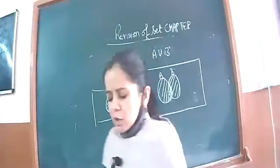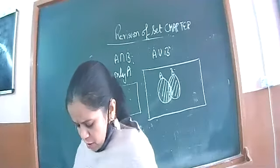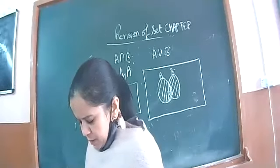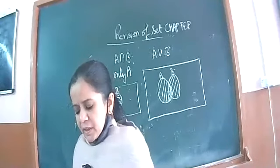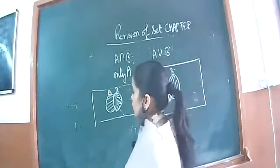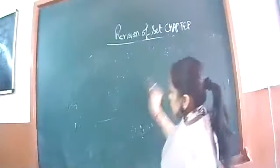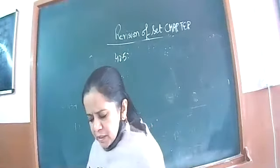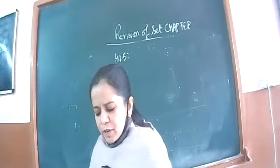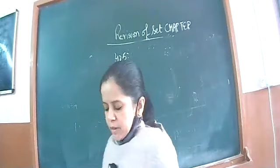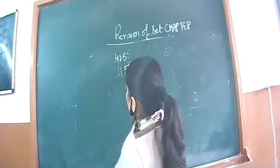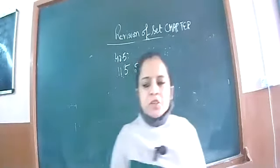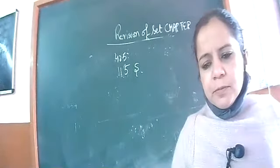Please note down this question. In a survey of 425 people, it was found that 115 watch the sports channel — I will represent sports channel by S. Next, 160 watch the discovery channel — discovery channel is represented by D with 160. 80 watch both sports and discovery channel.